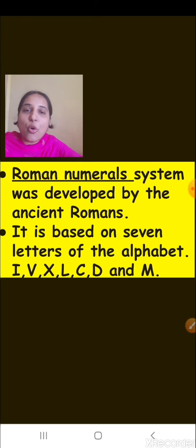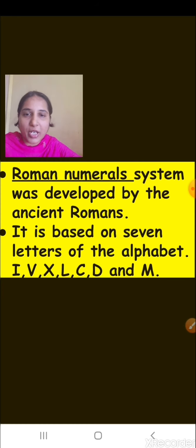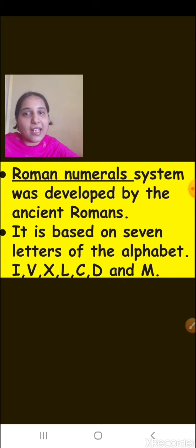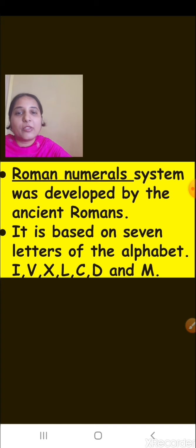The Roman numeral system was developed by ancient Romans. It is based on 7 letters of the alphabet: I, V, X, L, C, D, and M. Each of these letters represents a different value.